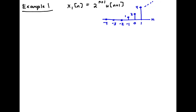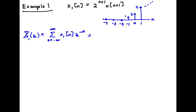We write the definition of the transform and compute it. X1 of z is the infinite sum from n equal minus infinity to plus infinity of x1 of n times z to the minus n. Since this sequence starts with non-zero values at n equal minus 1, we can change the limits of summation to go from n equal minus 1 to infinity of 2 to the n plus 1 times z to the minus n.